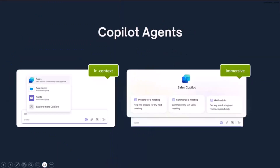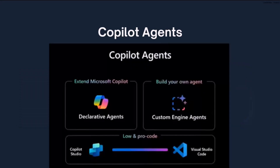When you talk about Copilot agents, you may have heard of them already. You can use them in context — just tag them — or use them in an immersive view. There are two possible ways to use Copilot agents. First, you have declarative agents, which extend the already existing Microsoft Copilot. But you can also build your own agent with more flexibility.